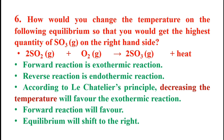Number six: how would you change the temperature on the following equilibrium so that you would get the highest quantity of SO3(g) on the right hand side?